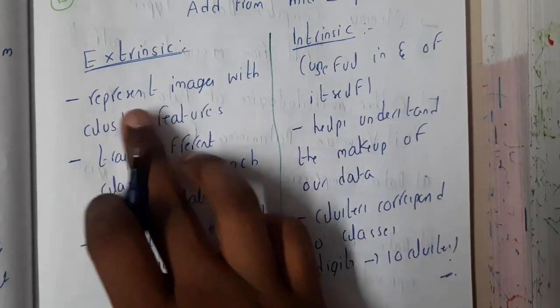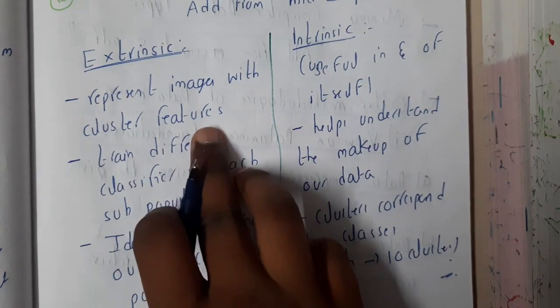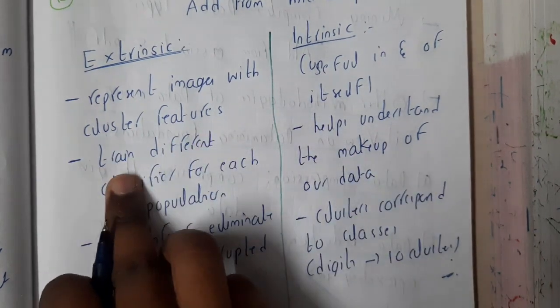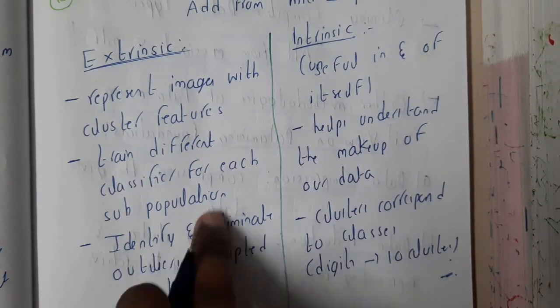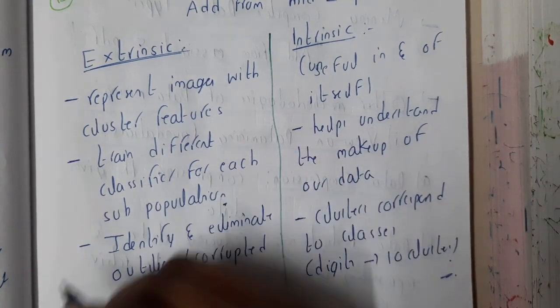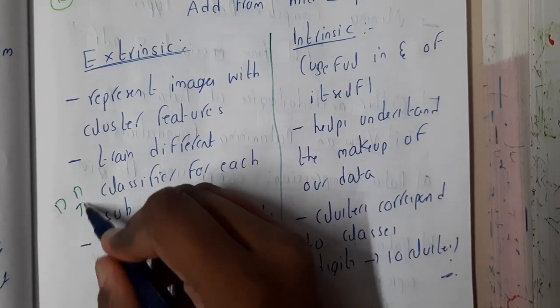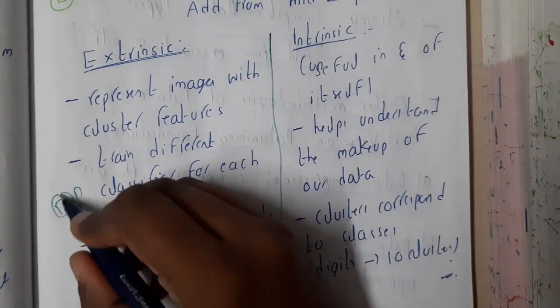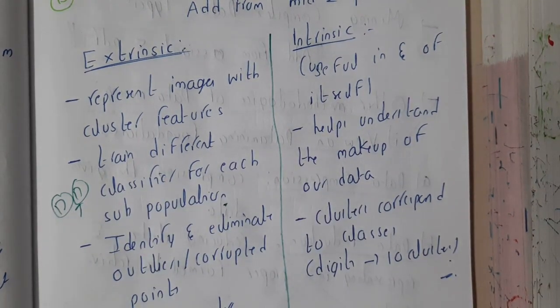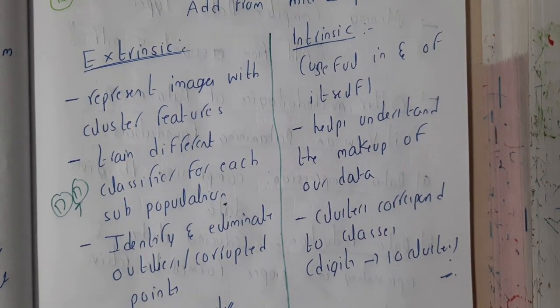So in extrinsic, represent images with cluster features, training with different classifiers for each sub-problem. So basically, whenever there is any kind of problem or population, we will be using different sub-classifiers so that you will be ending up with the same result all the times. Identifying and eliminating the outliers and occurrences is possible here.